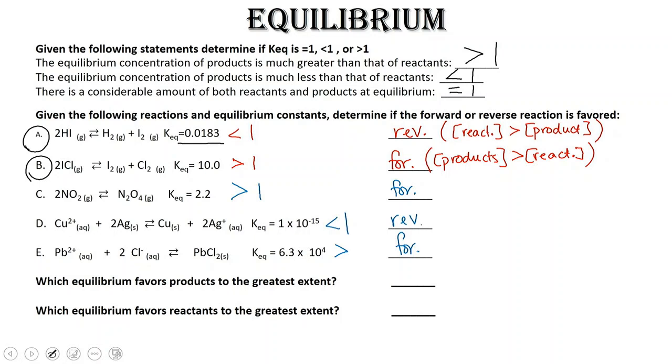Letter C. We have 2 moles of nitrogen dioxide forming 1 mole of dinitrogen tetraoxide. Notice that the equilibrium is greater than 1, it's 2.2, so we have a forward reaction. Once again, with the forward reaction, our products are favored over our reactants.